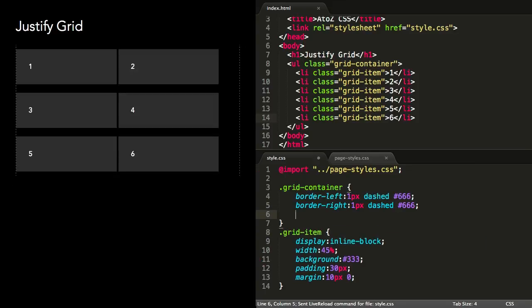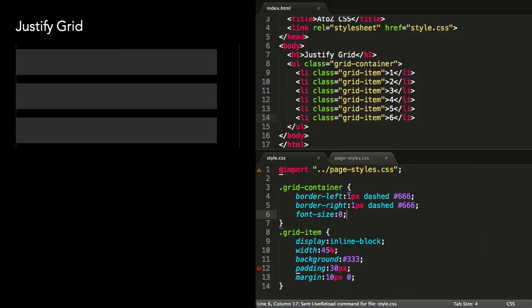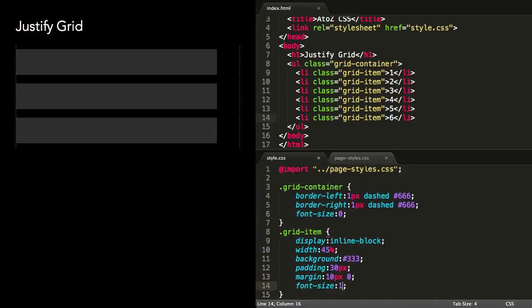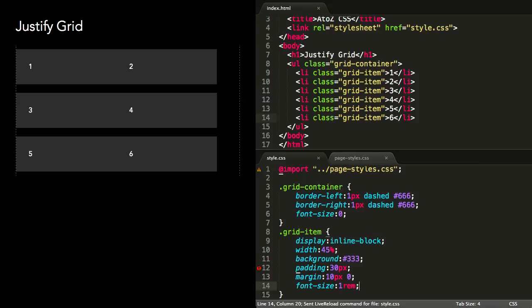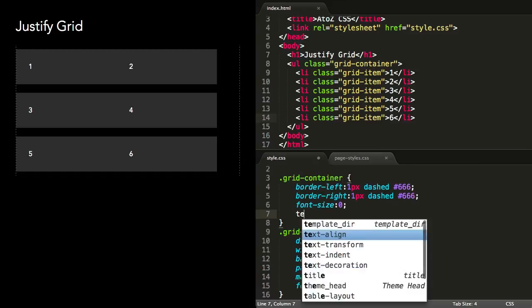To remove the spacing introduced by inline block, I'll set the font size of the grid container to zero, and the font size of the grid items to one rem. Now we can set text align justify on the grid container.